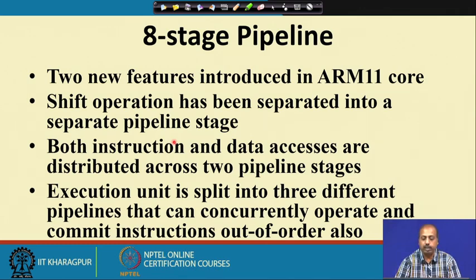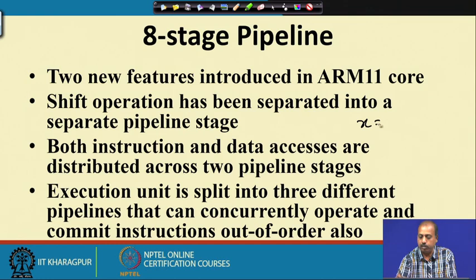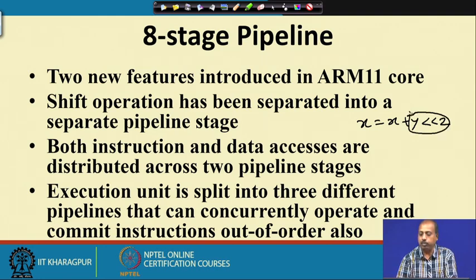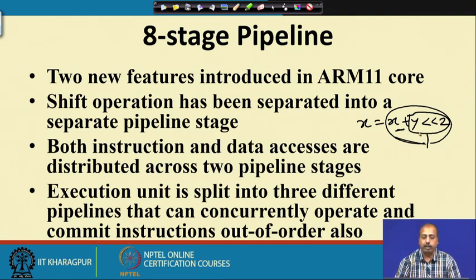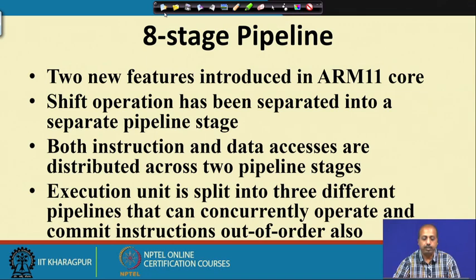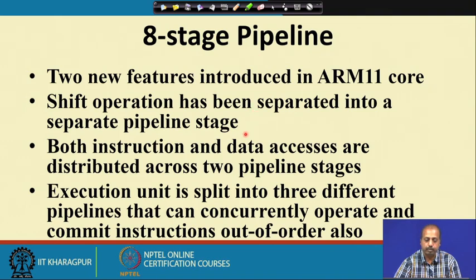For example, if you have an instruction like x = x + (y left-shifted by 2), the shift of y by 2 is done by a separate pipeline stage and the addition is done by another separate pipeline stage. Previously, these two were done together, which took more time. Now, divided into 2 pipeline stages, the operation will be faster, reducing the delay of operation.